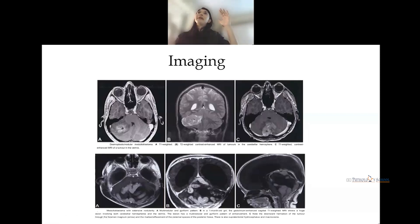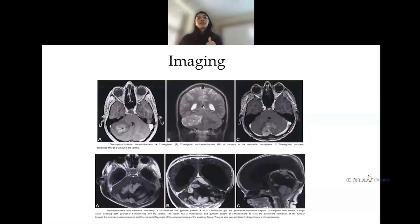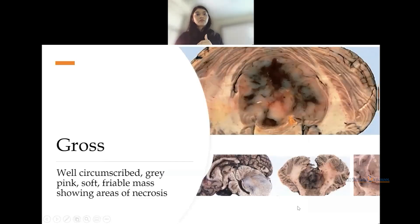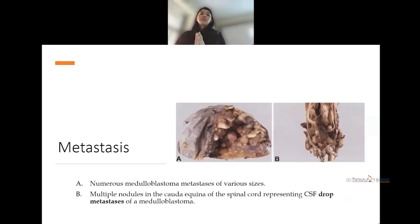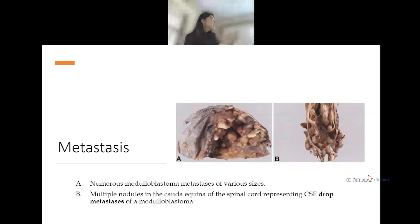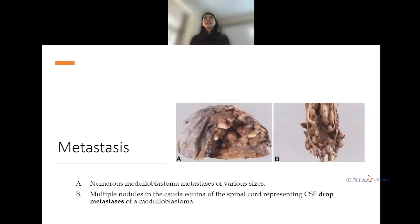Because of the accumulated CSF, patients present with macrocrania even at the OPD, and we can see extension of tumor into the foramen magnum. On gross examination, it is a well-circumscribed, gray-white, soft friable tumor showing foci of necrosis. Metastasis images show tumor spread into the dura and cerebral hemisphere, and the cauda equina of the spinal cord demonstrates drop metastasis.